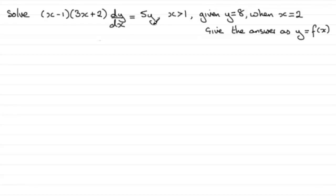To do questions like this, what we need to do is separate the variables - that is, get all the x's on one side and all the y's on the other. So what we do is divide both sides by y and by (x-1)(3x+2) and rearrange the dy/dx.